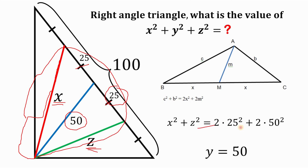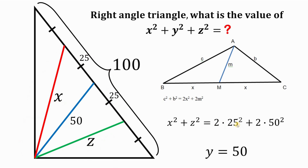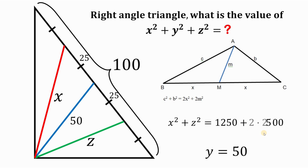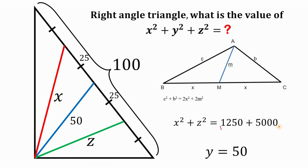Let's simplify. 25 squared equals 625, and 50 squared equals 2,500. Multiplying: 2 times 625 gives us 1,250, and 2 times 2,500 gives us 5,000. Adding 1,250 plus 5,000 gives us 6,250. So x squared plus z squared equals 6,250.